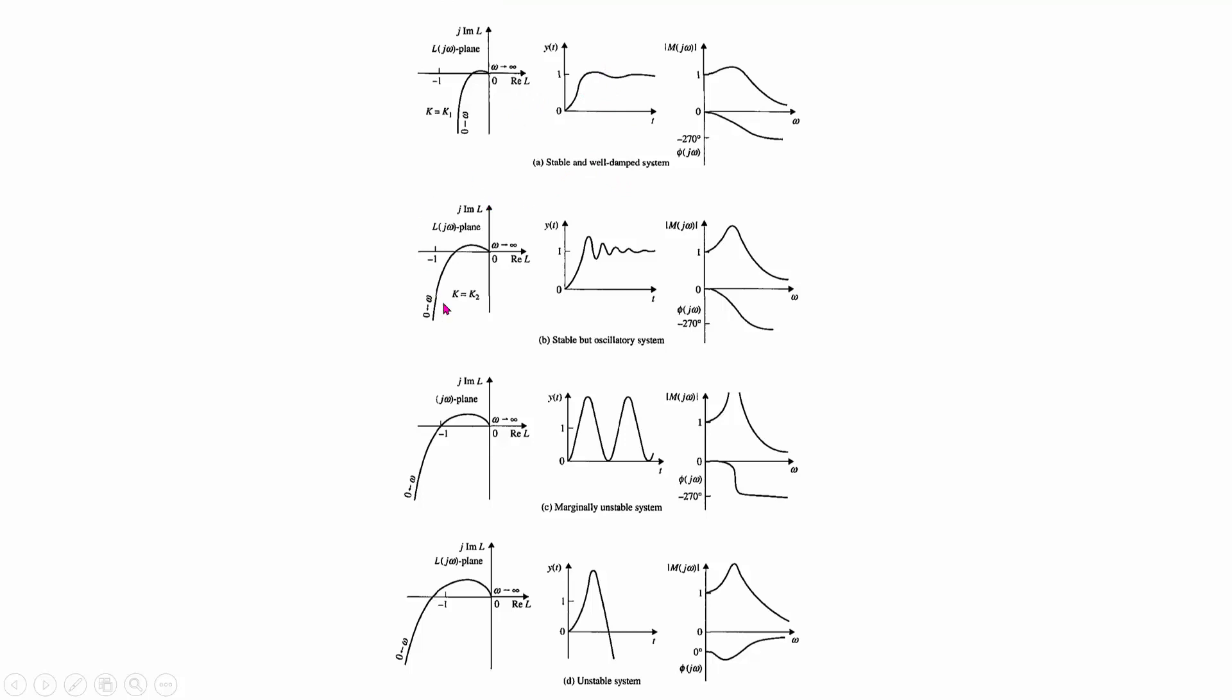The third one is a marginally stable case, while the fourth shows an unstable situation where the time response of the system will be indefinitely rising, monotonically increasing.